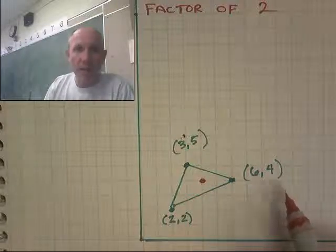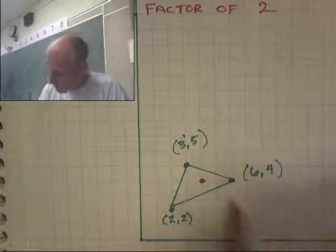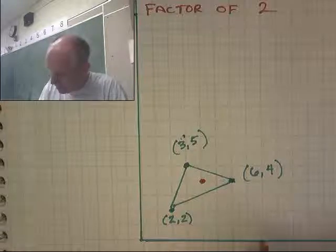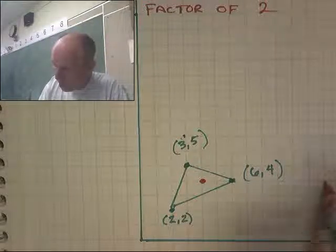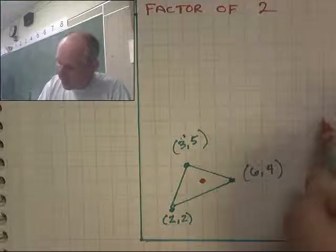6,4. That becomes 12,8. 12,8. Alright, where's 12,8? This is 6, 7, 8, 9, 10, 11, 12, 8. 1, 2, 3, 4, 5, 6, 7, 8.